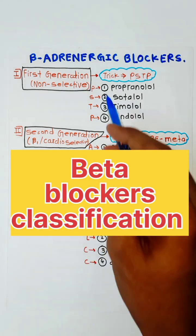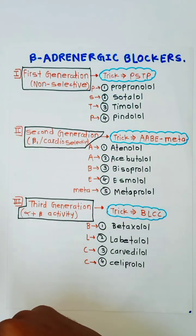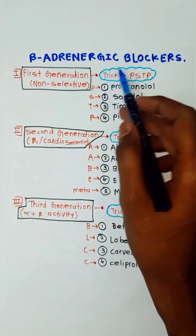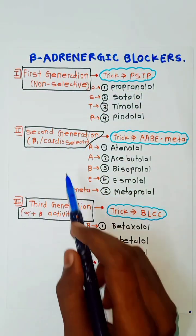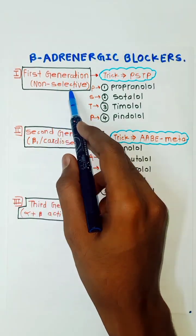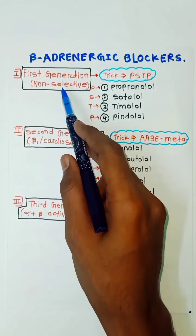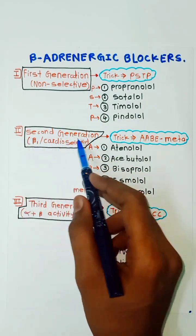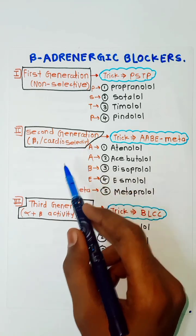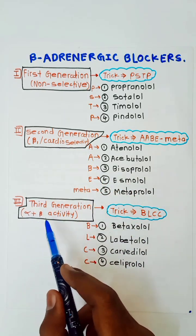Hello guys, today's topic is beta blocker classification. Beta blockers are subdivided into three groups: first generation, second generation, and third generation. First generation is non-selective drugs, meaning they act on all the beta receptors—beta 1, beta 2, and beta 3. Second generation is beta 1 selective or cardio selective. Third generation is alpha plus beta activity.